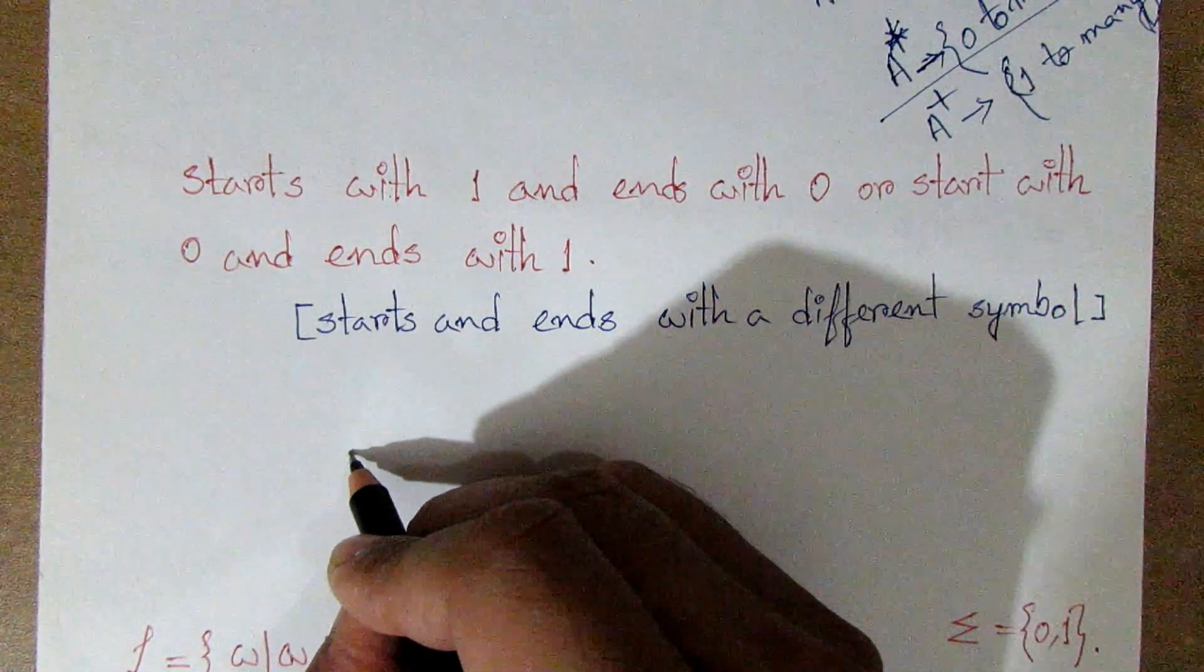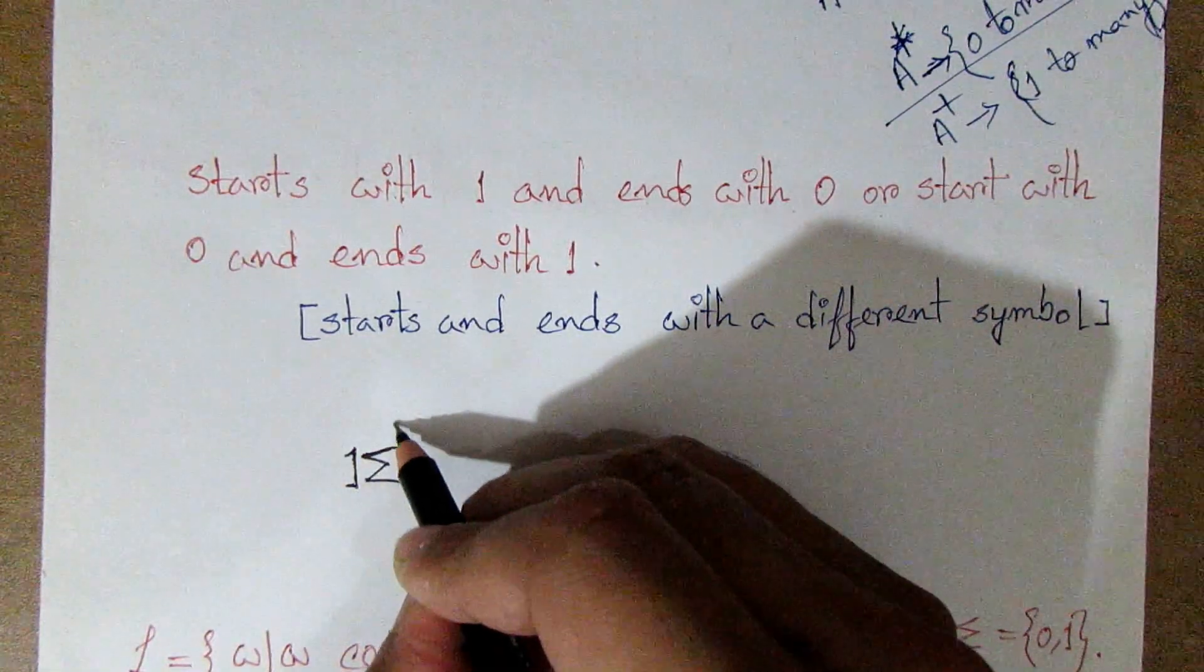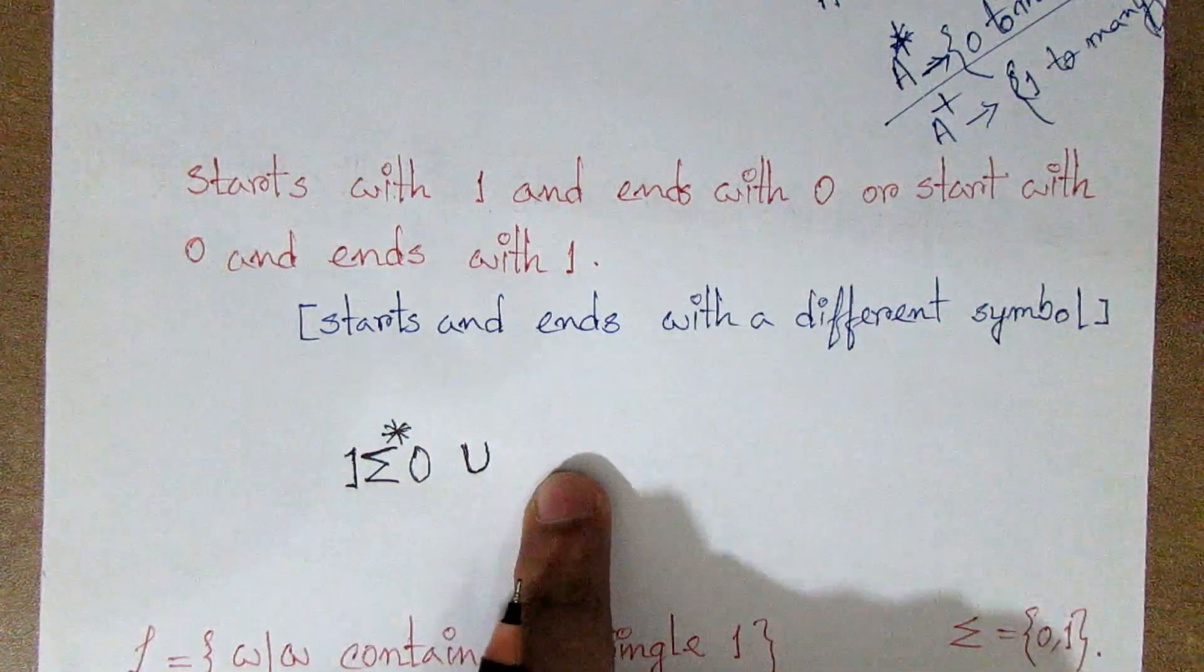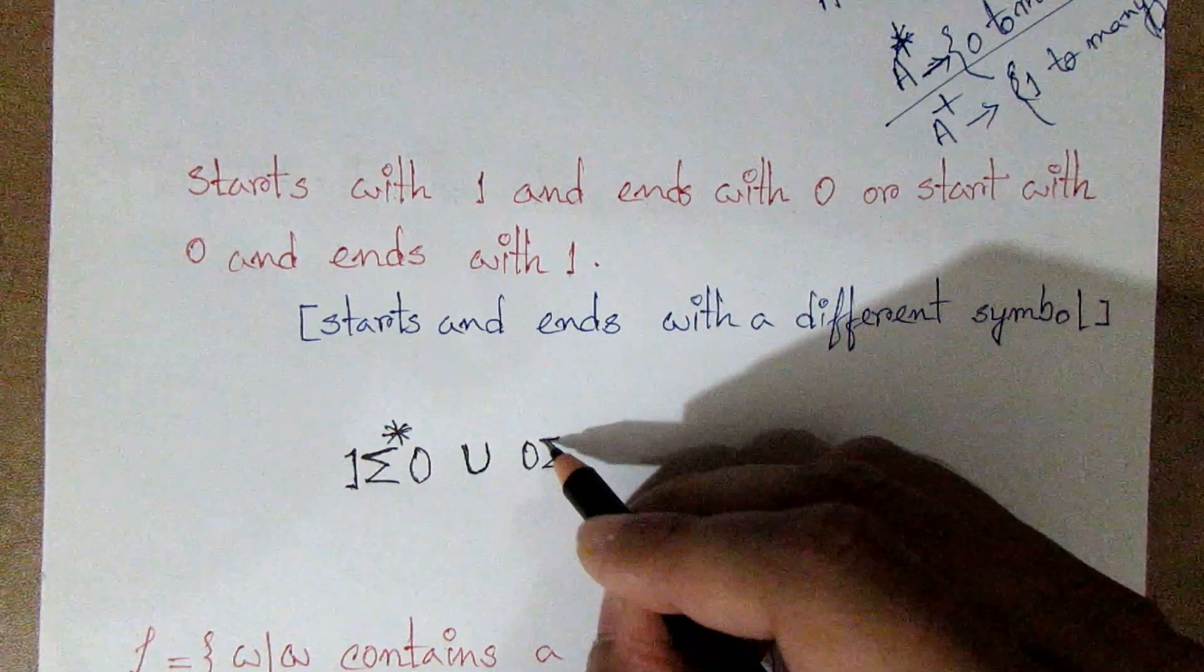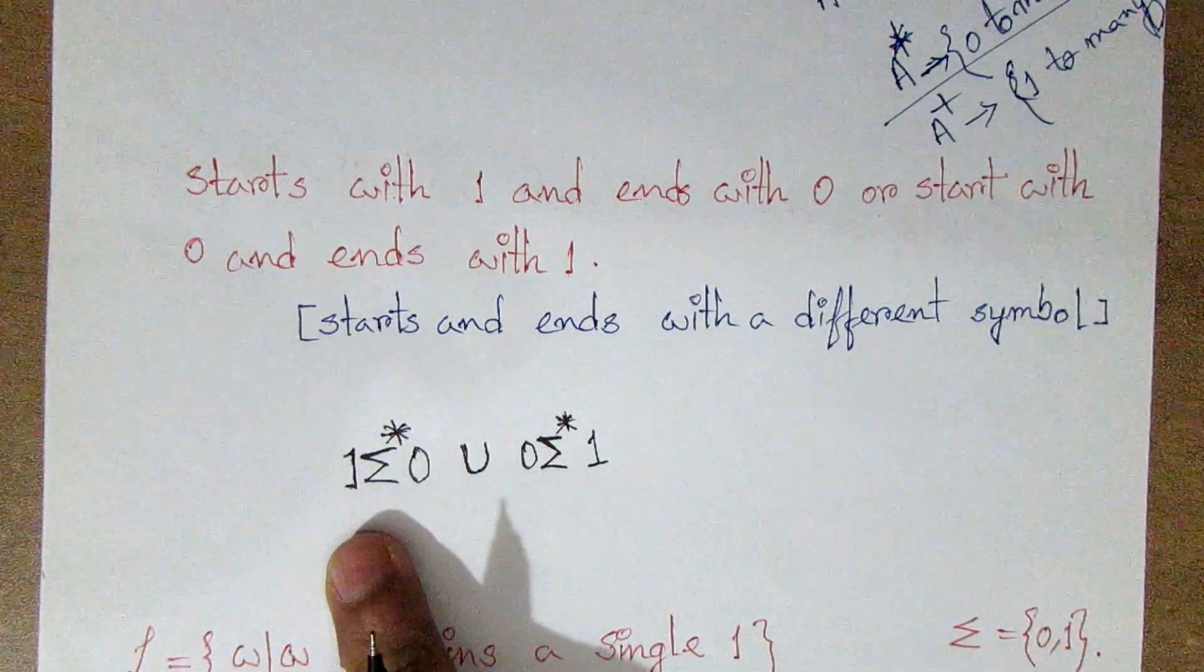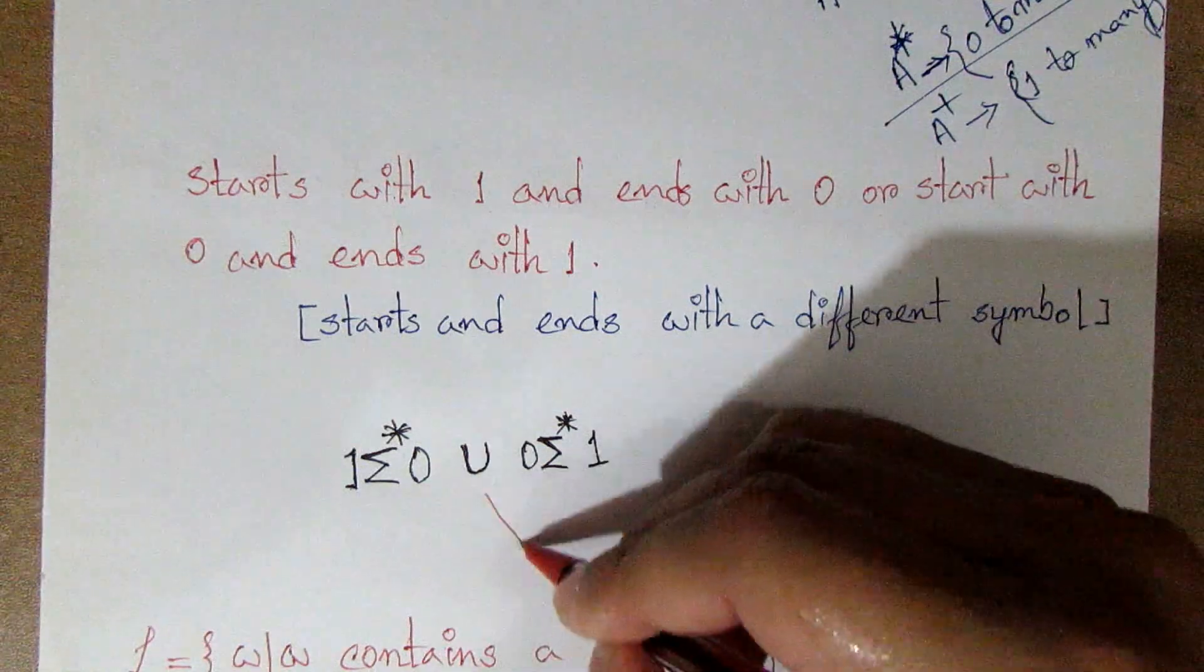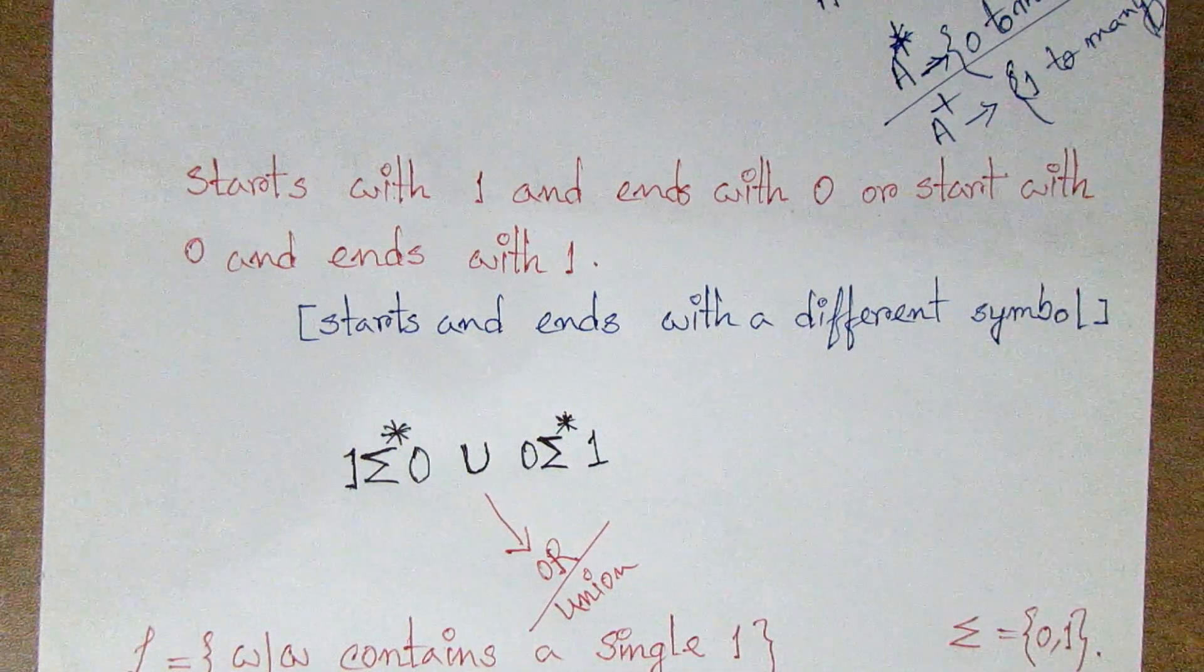Start and ends with a different symbol. So start with 1, 1 start, and then 0 end. Or 0 start and 1 end. If you want to start with 1 then end with 0, or if 0 start will have 1 end. This will not be the same symbol.